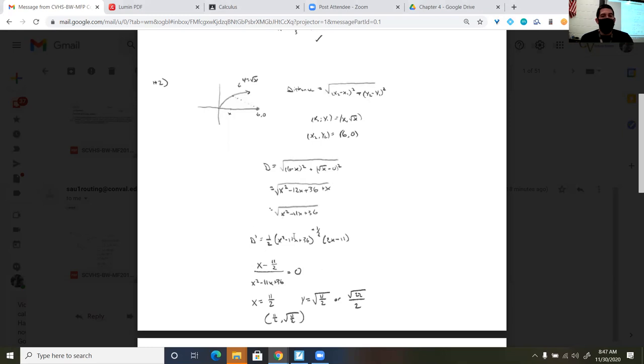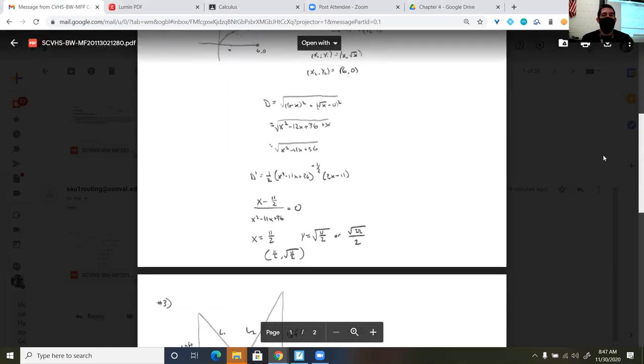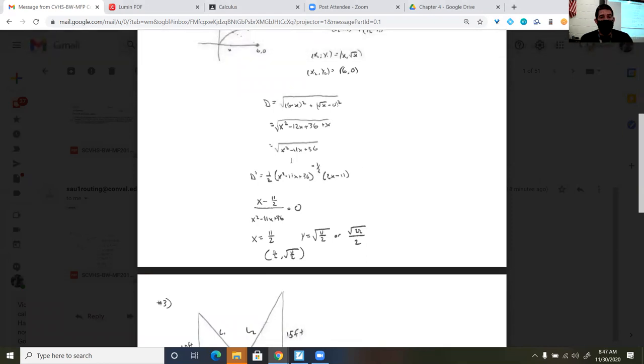Now from here, I took the derivative. So I made this an exponent of 1 half. I brought the 1 half down, subtracted 1. Remember the chain rule, because we have a function embedded inside of another function. And then I went ahead and I distributed the 1 half to this binomial here.